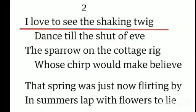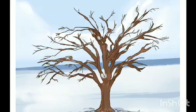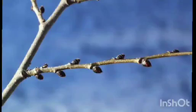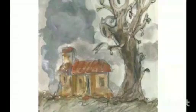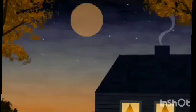Now look at the second stanza. The first line of the second stanza is: 'I love to see the shaking twig.' My dear student, you can easily imagine that the tree has become leafless because of the fateful gusts — all the leaves have been shaken off the tree. So the poet is watching the shaking twig. Twig means very small branches of the tree. And in the second line it is written: 'Dance till the shut of eve.' You can easily understand that he is watching the dance of the twig, which is dancing until the evening.